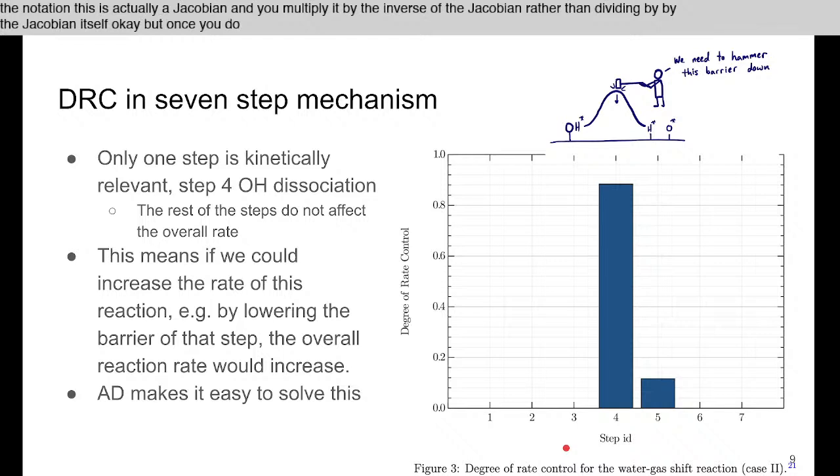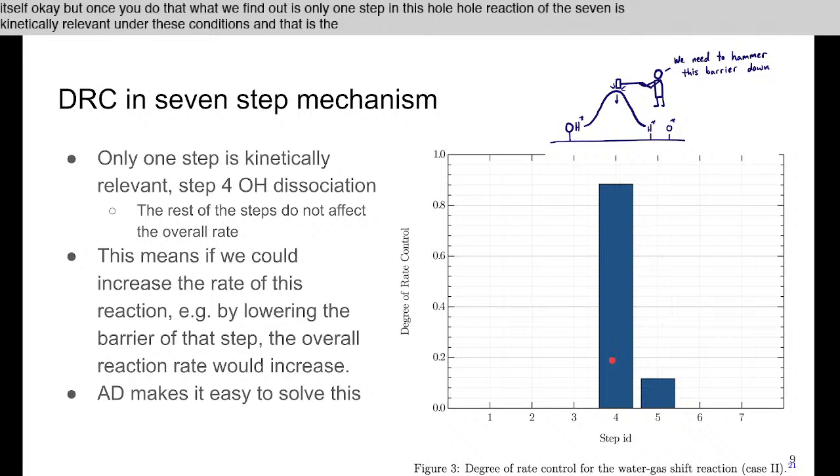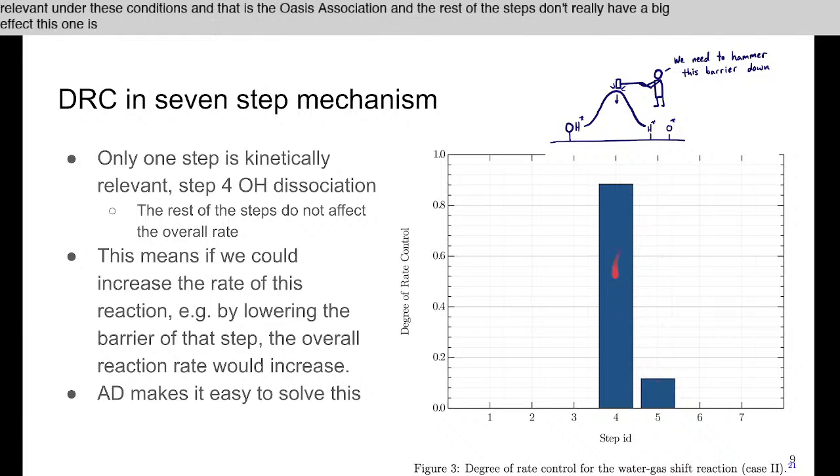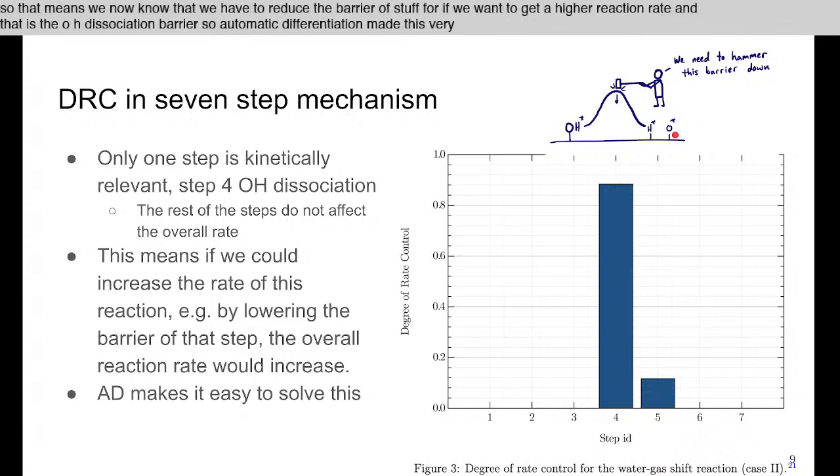Once you do that, what we find out is only one step in this whole reaction of the seven is kinetically relevant under these conditions, and that is the OH dissociation. The rest of these steps don't really have a big effect - this one is small compared to this one. That means we now know that we have to reduce the barrier of step four if we want to get a higher reaction rate, and that is the OH dissociation barrier. So automatic differentiation made this very straightforward to do even when we didn't have that analytical solution.